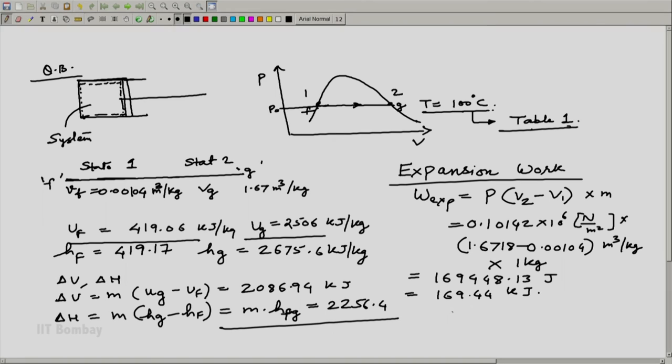My answers therefore are: the expansion work is equal to 169.44 kilojoule and the change in thermal energy and the change in enthalpy is given by this formulation. This is the answer for this question.